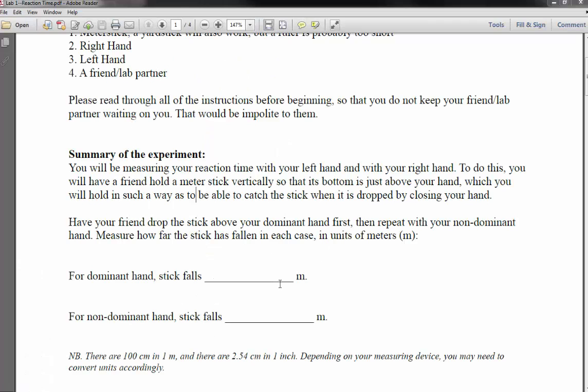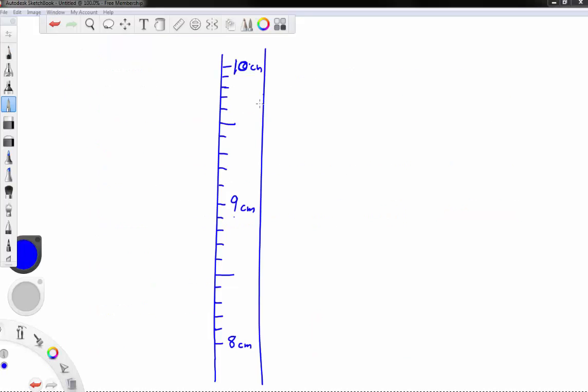So the first question is, how far does the meter stick fall in each case in meters? Note you are presumably using a meter stick which has marks in millimeters and centimeters. So if we zoom in on the meter stick, it will look something like this. This goes all the way down to 0 and this goes all the way up to 100. So 8 centimeters, 9 centimeters, 10 centimeters, and these smaller tick marks each represent millimeters.